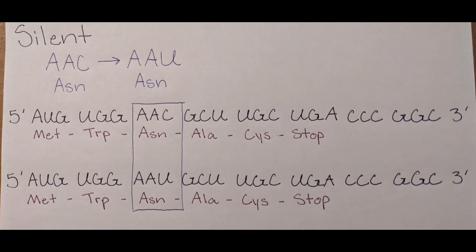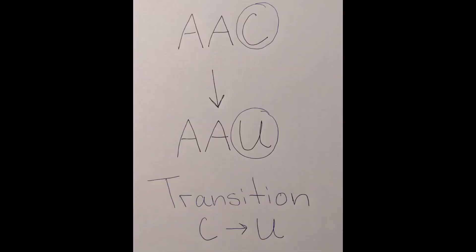A silent mutation is when a base nucleotide is substituted, but there are no changes. This substitution happens when multiple codons can translate into the same amino acid. Since the protein is not affected, this mutation goes by unnoticed.